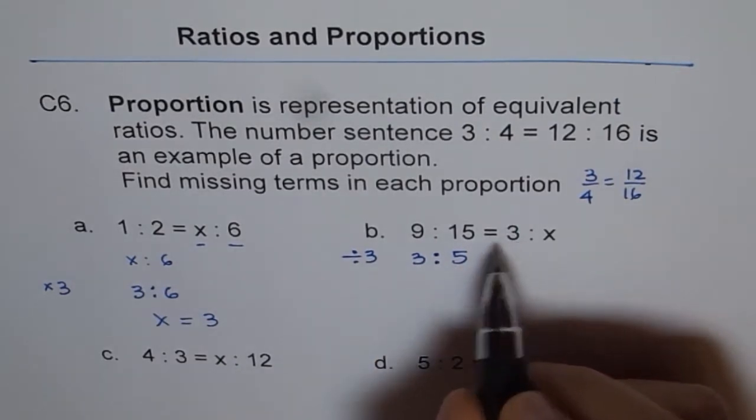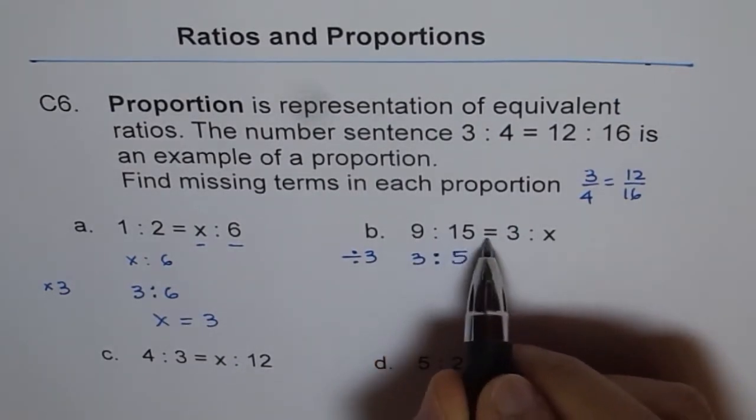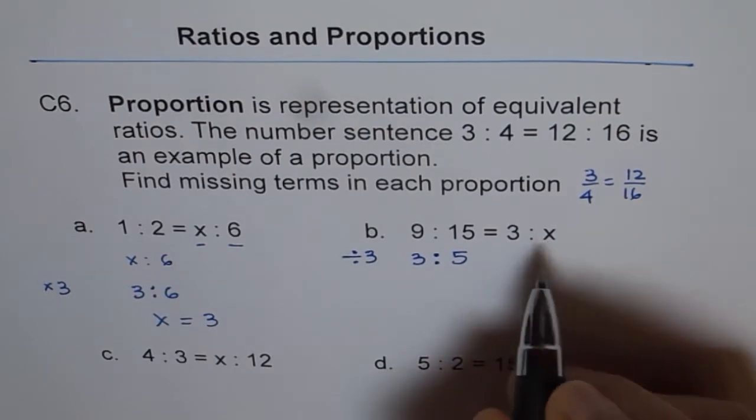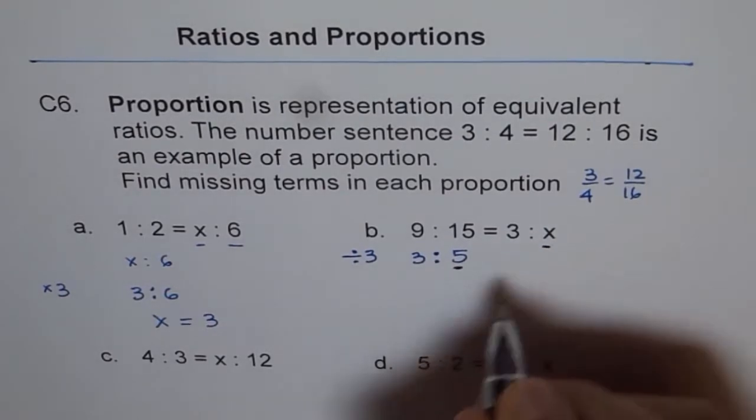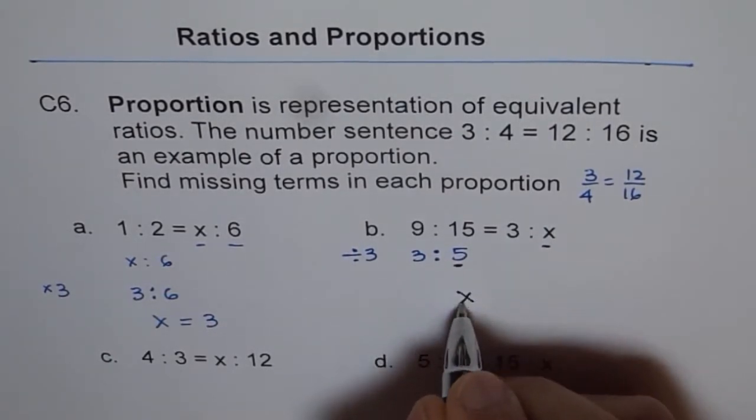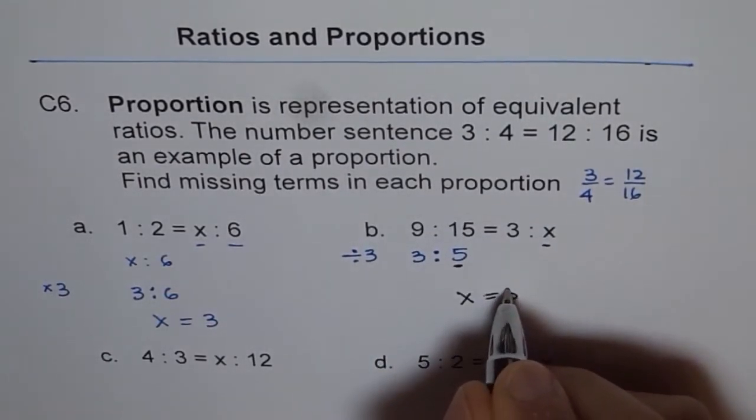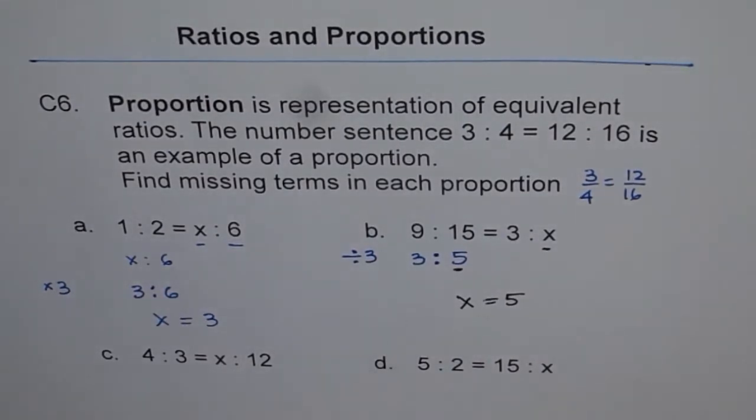Now my question was 9 is to 15 equals to 3 is to x. Now we can compare these two. If you compare, you will find that x should be equals to 5. So we get our answer, x equals to 5. That is how we are going to do it.